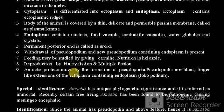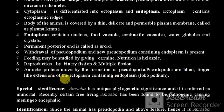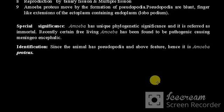Amoeba proteus moves by the formation of pseudopodia. Pseudopodia are blunt, finger-like extensions of the ectoplasm containing endoplasm, and are referred to as lobopodia.